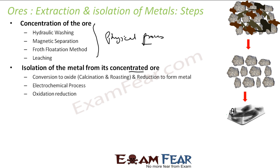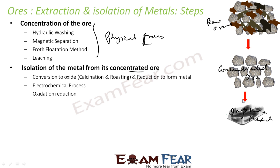The metal produced at this stage is impure metal — it looks like a metal but it's still impure. You start with raw ore directly from the earth's crust, make it concentrated ore, and then produce impure metal from that concentrated ore.